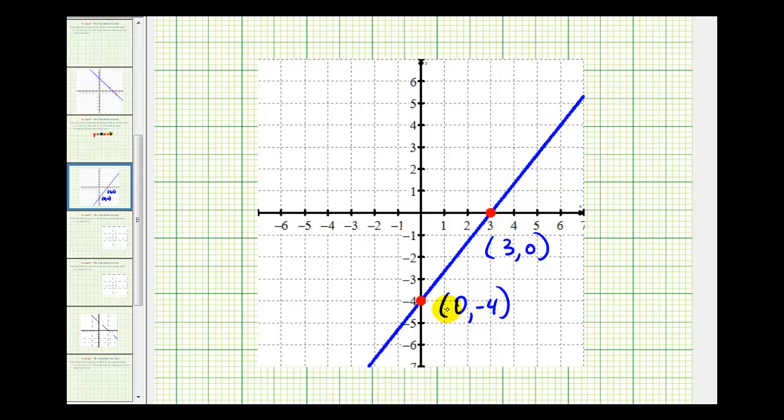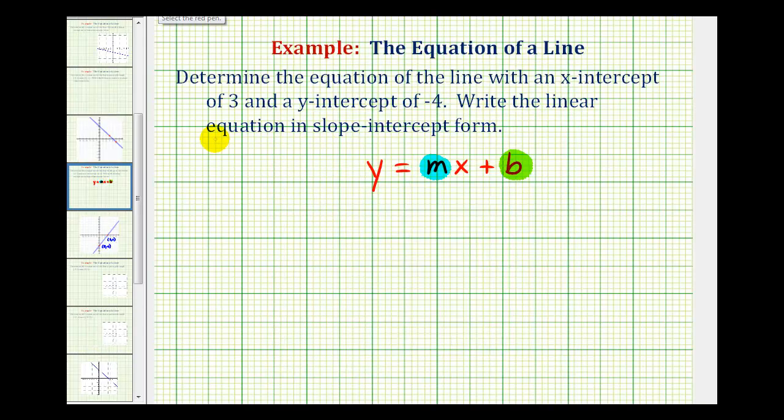Now let's go back to the previous screen. So if we have two points on the line, we can use the equation m equals y sub two minus y sub one divided by x sub two minus x sub one to find the slope of the line passing through these two points.